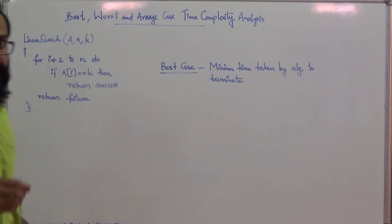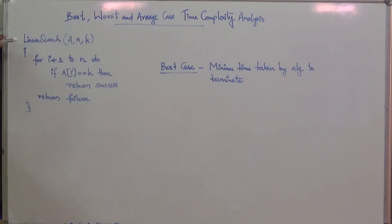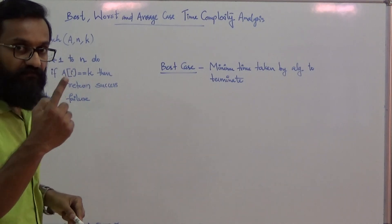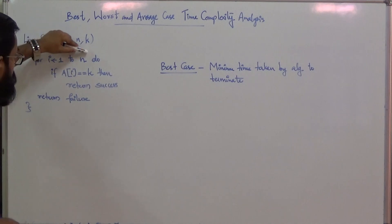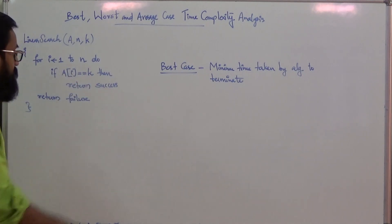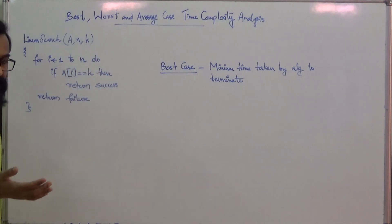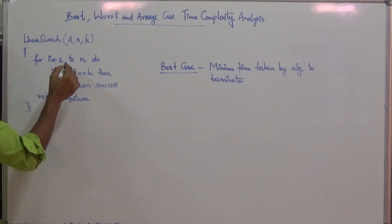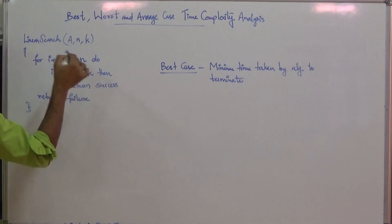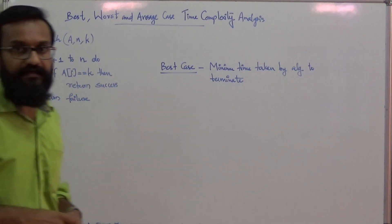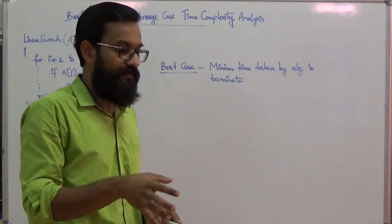Consider this algorithm — a pseudocode version of linear search. We have an array with n elements and let k be the search key. For i varying from 1 to n, it checks whether a[i] equals the key. If the current element matches the search key, it returns success. If no element matches, the algorithm exits the loop and returns failure, indicating the key does not exist in the array.